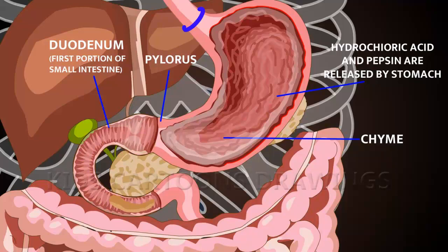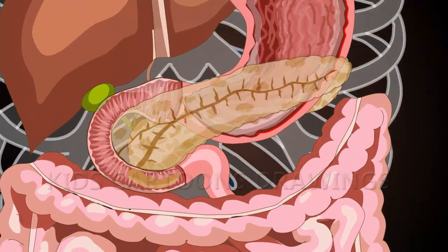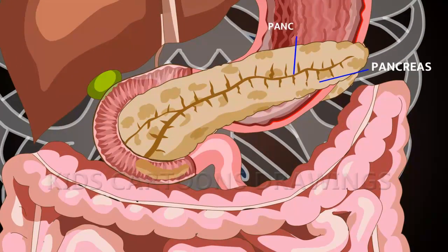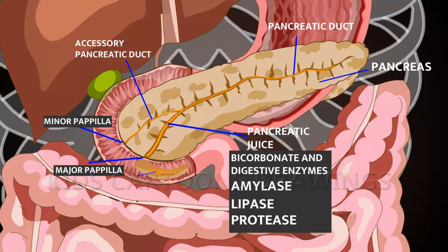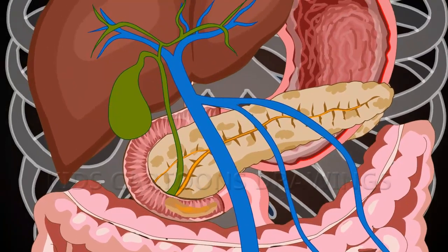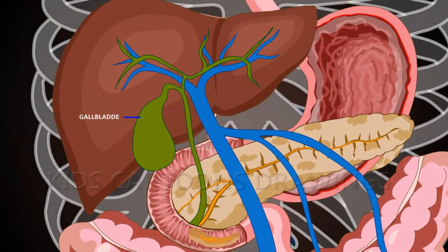Within the duodenum, chyme mixes with pancreatic juice and bile. The process of digestion causes neurohumoral stimulation of pancreatic juice. Pancreas cells release pancreatic juice, which flows through the pancreatic ducts, leading to the main pancreatic duct and accessory pancreatic duct, and juice is released into the duodenum through the major and minor papillae, mixing with chyme.